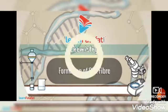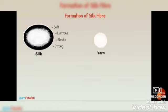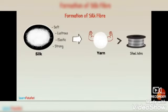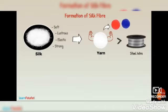Formation of Silk Fiber. Silk is a very important natural fiber. It is soft, lustrous, elastic and strong. You will be surprised to hear that yarn produced by silk is much stronger than a steel wire of similar thickness. More importantly, it can be colored very easily.